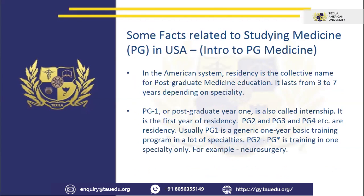Now comes PG studies. In the American system, as I have mentioned, residency is the collective name for postgraduate medicine education. It lasts from 3 to 7 years depending on the specialty — whether you want to become a surgeon or a physician, the duration differs. If you want to become a neurosurgeon or similar, it goes to somewhere around 6 to 7 years of studies.